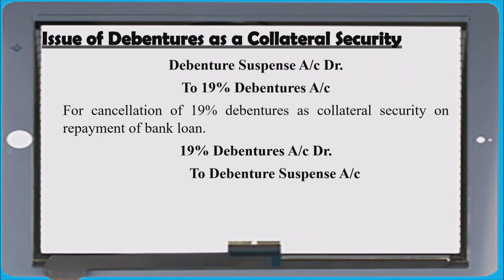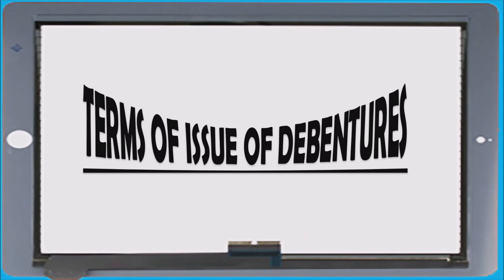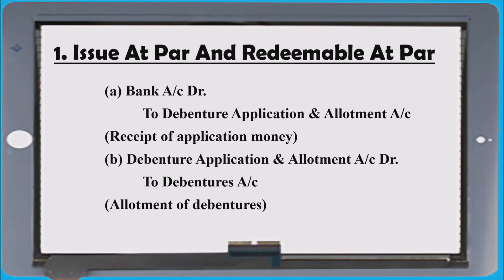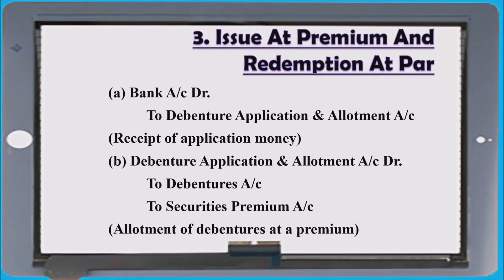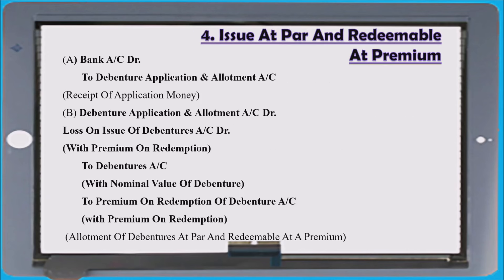There is a possibility for format questions from debenture combining two areas. In previous board exams, issue of debenture as collateral security was asked — remember the entry concept. The terms of issue of debentures: different cases — issued at par and redeemable at par, the entries are very important. Issued at discount and redeemable at par, there is a loss — that is the discount. Third case: issued at premium, redeemable at premium — securities premium will be there.